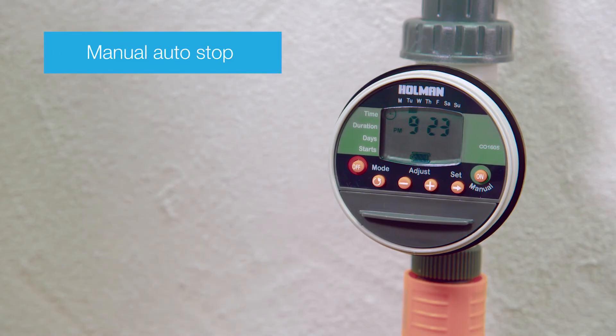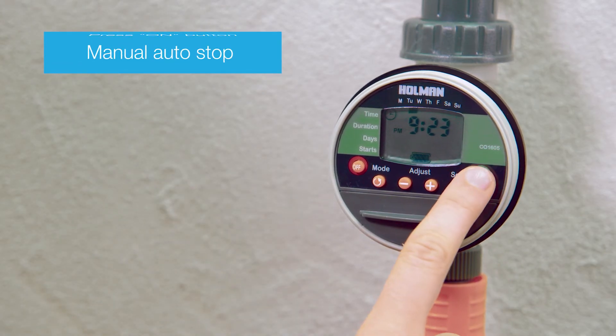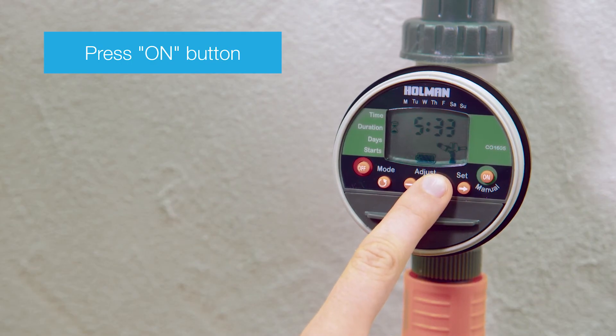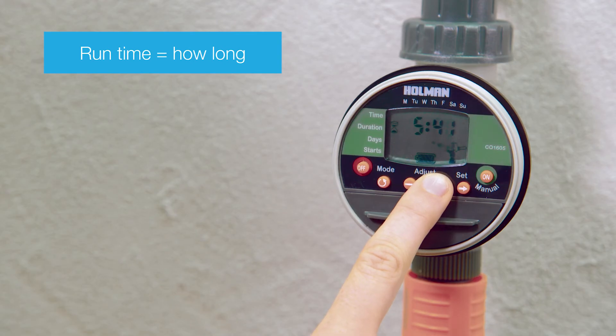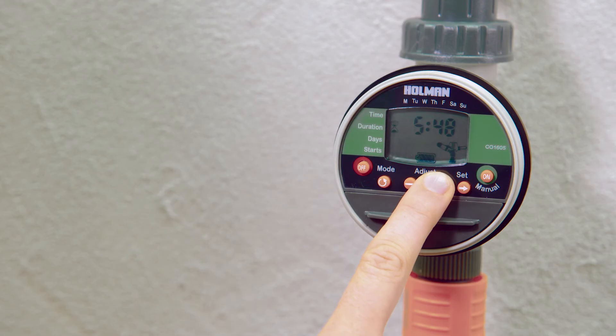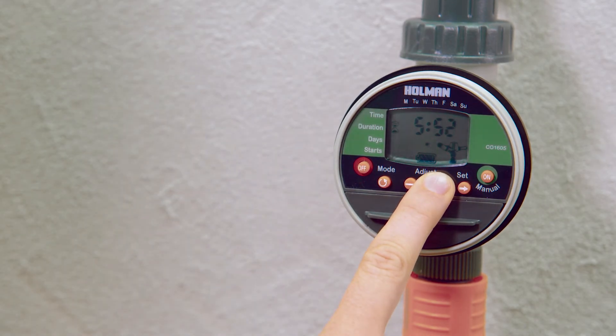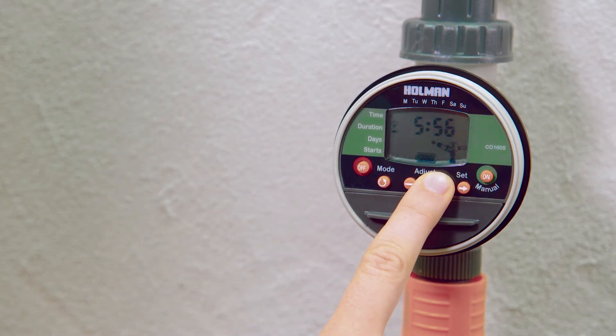To use the manual watering function, start by pressing the on button. Use the plus and minus to adjust the watering runtime. The tap timer will automatically stop when the manual program is completed. Using the manual function will not interfere with the previously programmed watering runtimes.